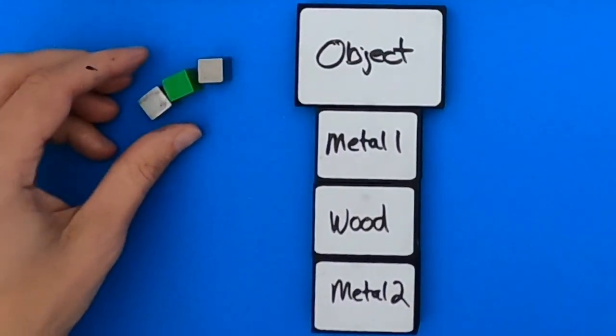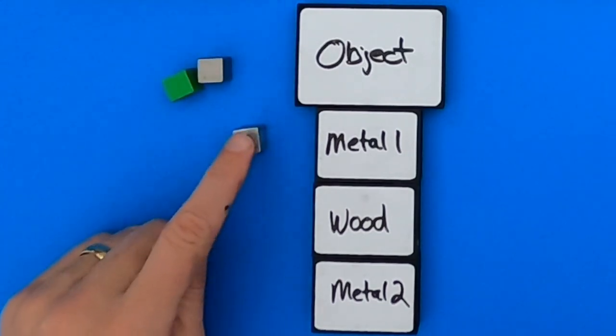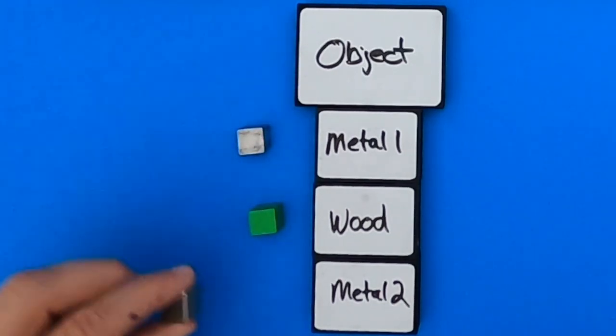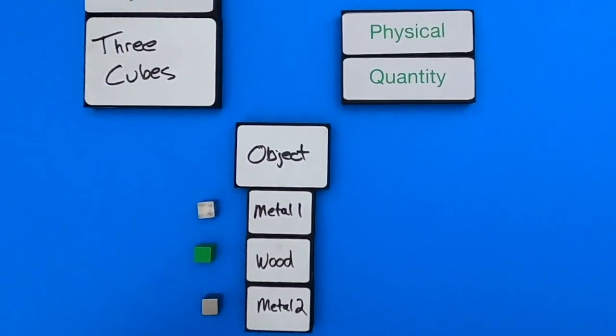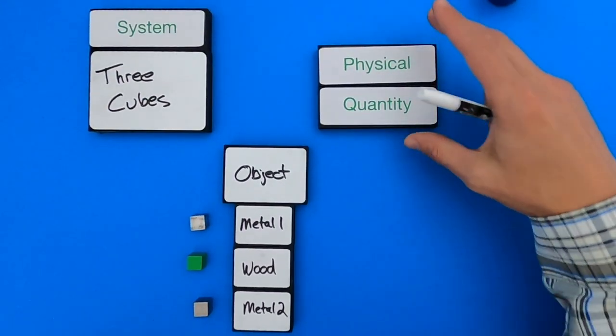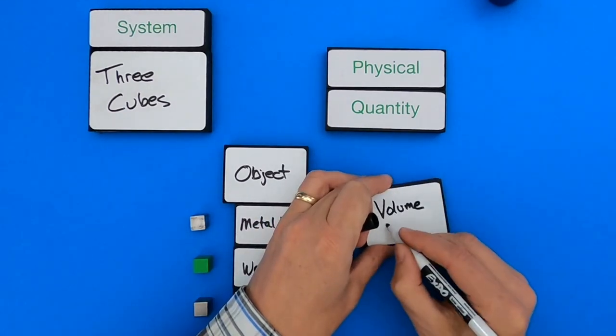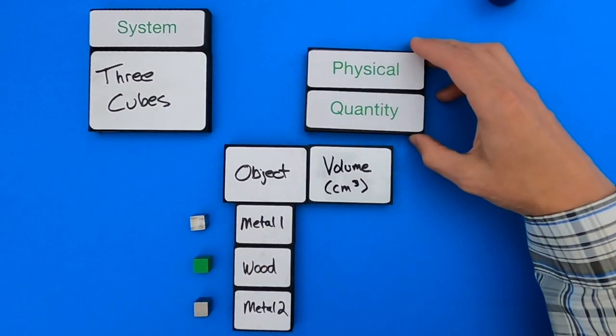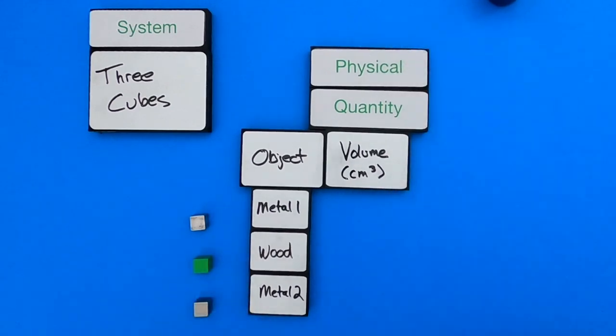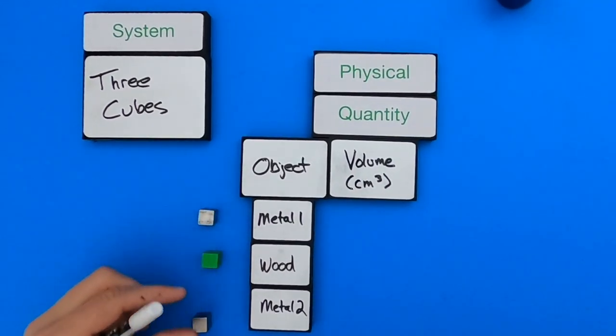So the objects that I'm going to be investigating are metal one, the wood, and then metal two. The next thing I have to decide is what physical quantity do I actually want to measure. And so one thing that I noticed when I was pulling them out is that they all had similar size. So they have a similar size scale, but that doesn't tell me what their actual volume is. So let me write that down.